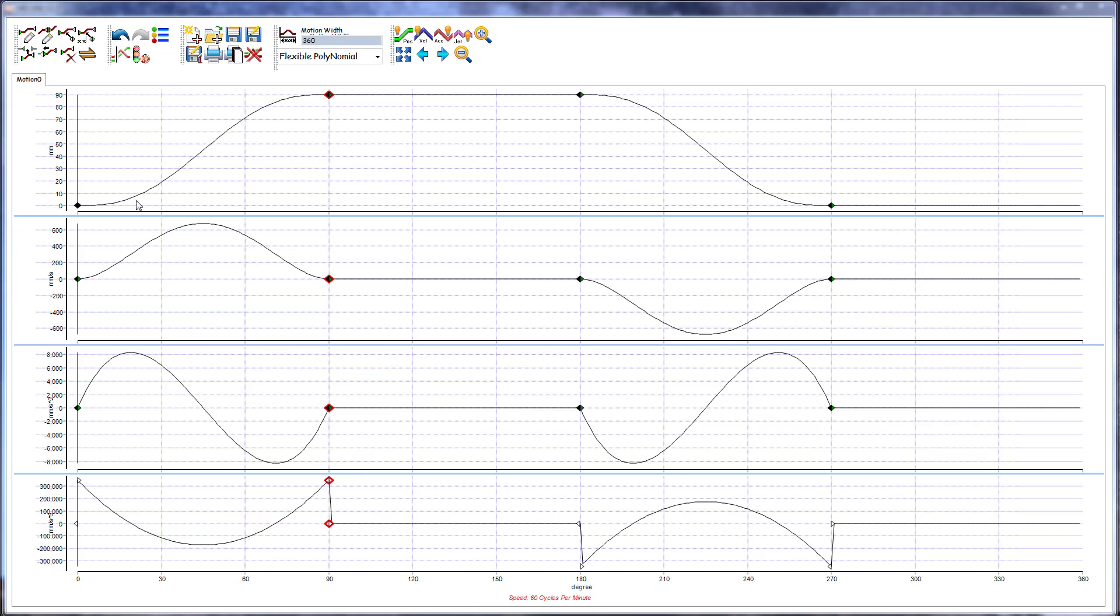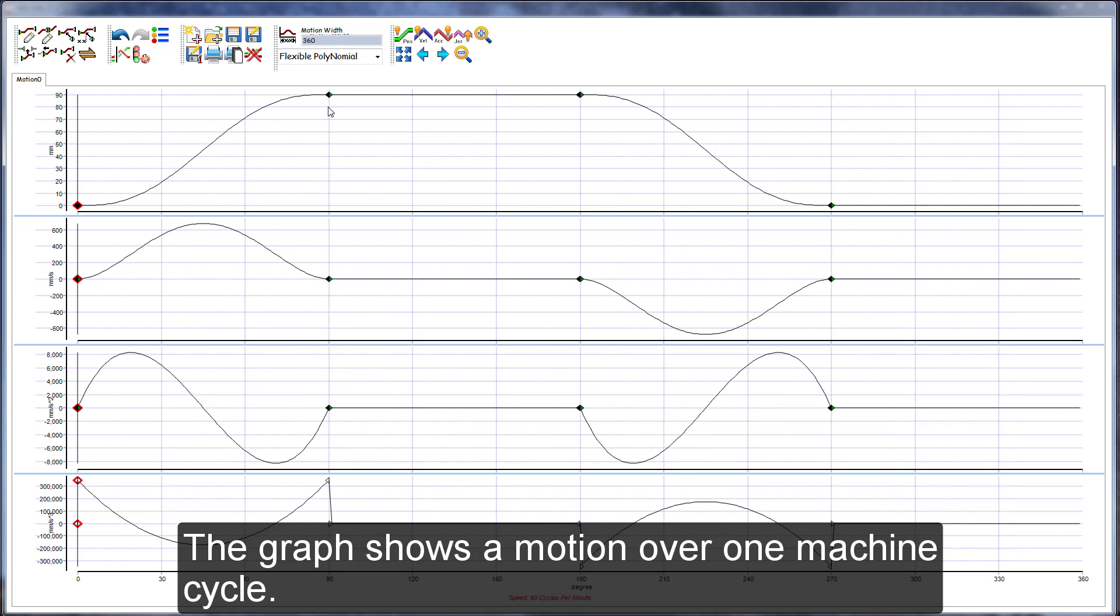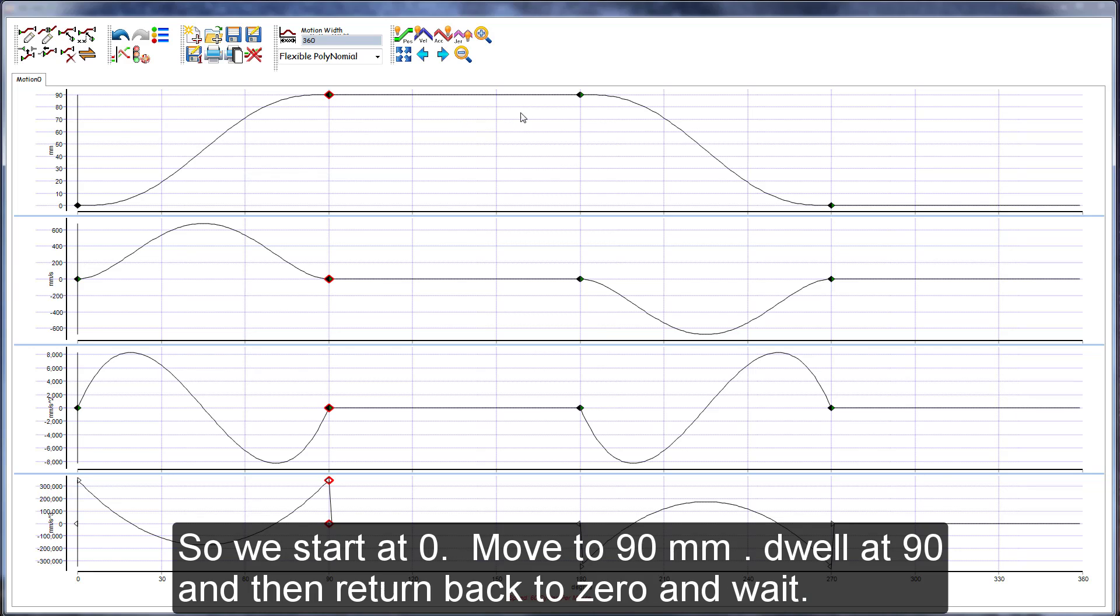The graph shows a motion over one machine cycle, so we start at zero, move to 90 millimeters, dwell at 90, and then return back to zero and wait.